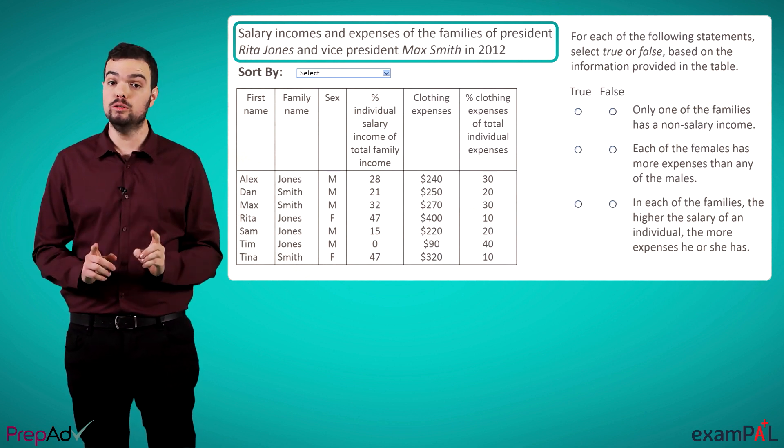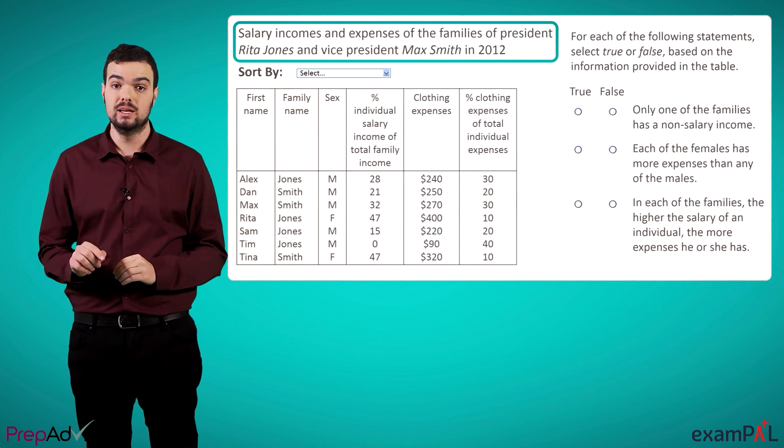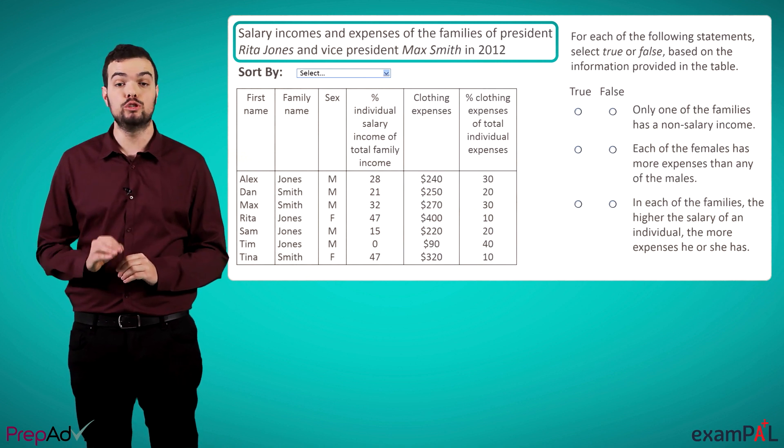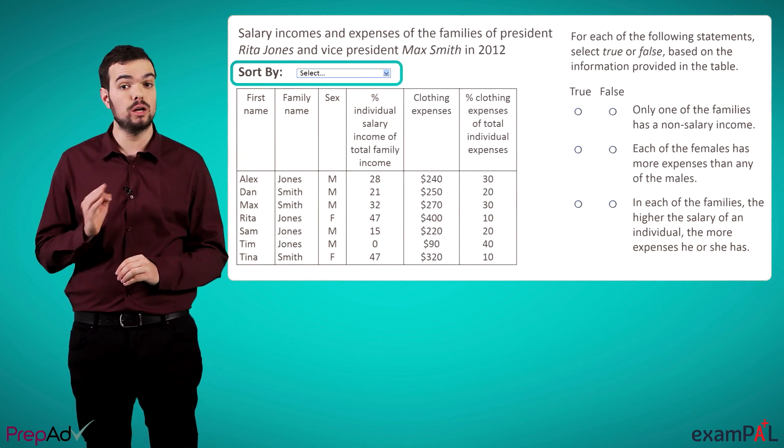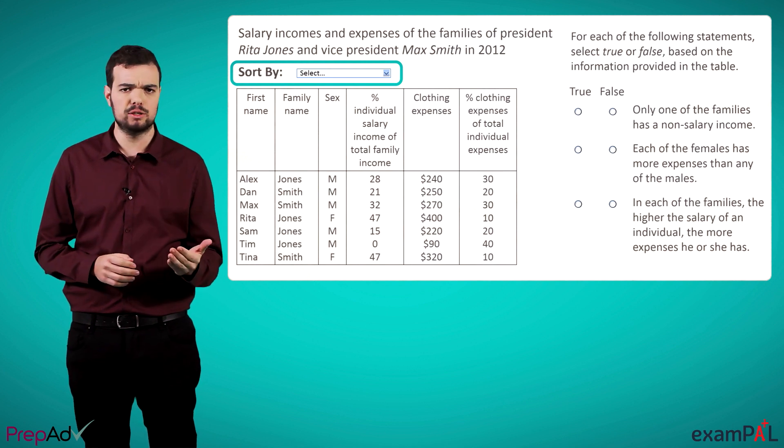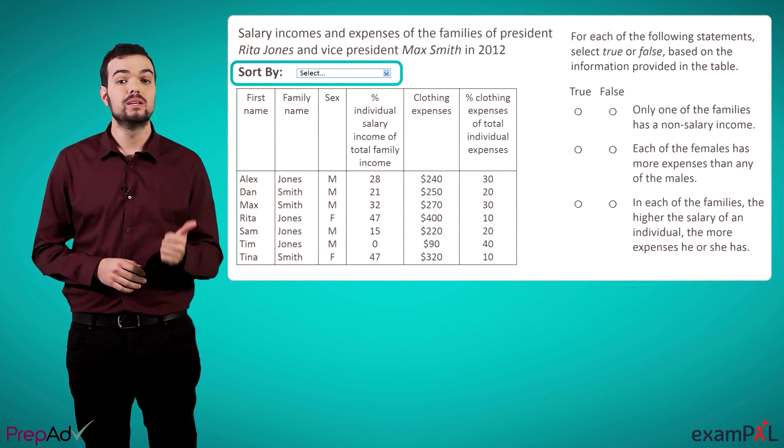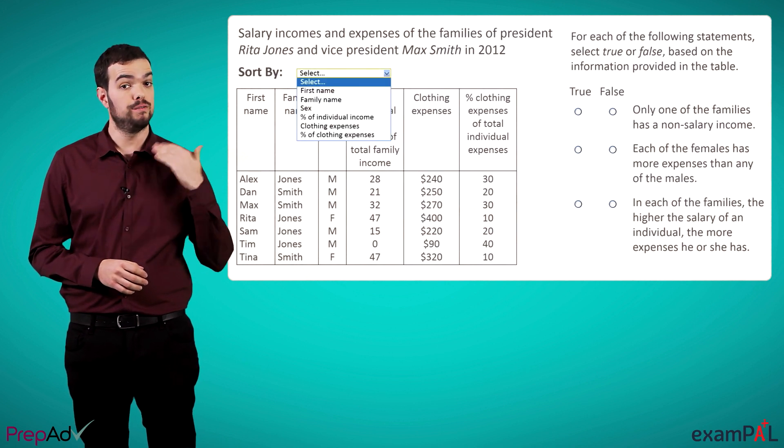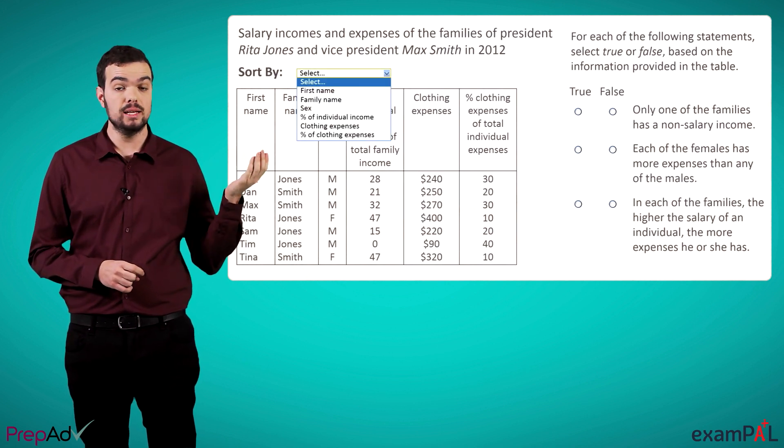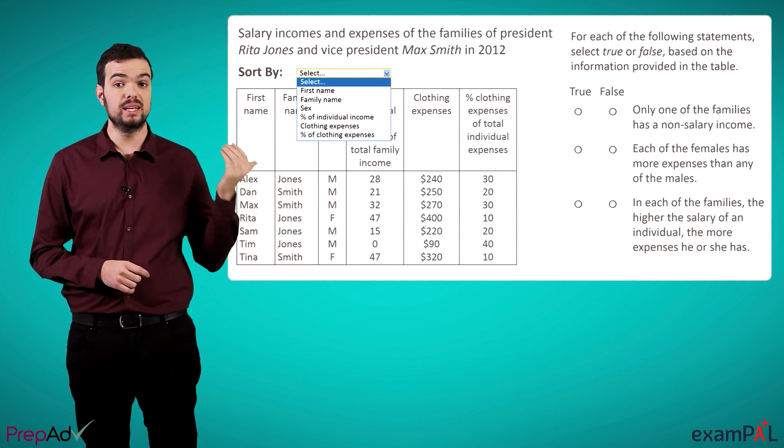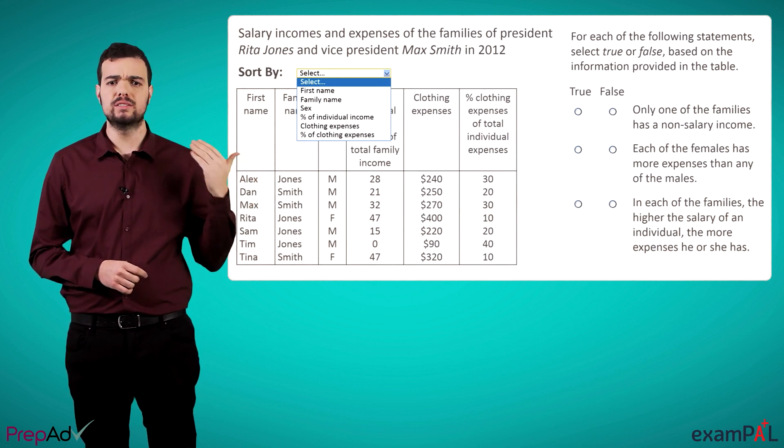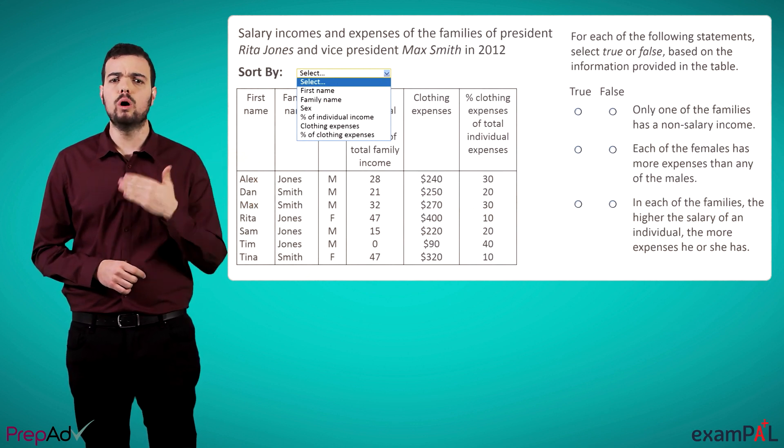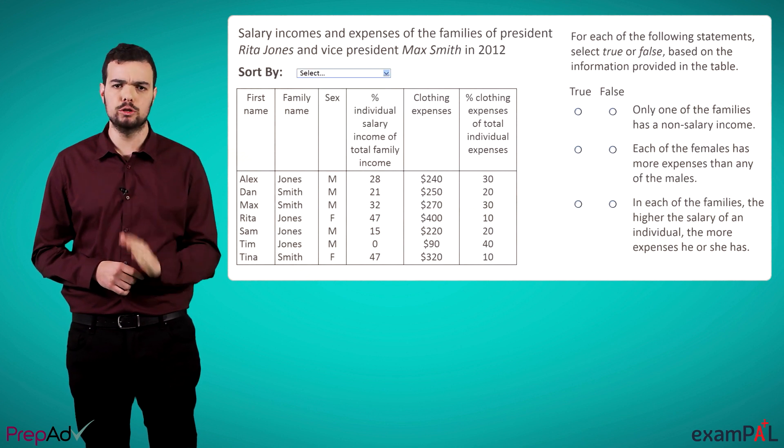But what is special about the tables in these questions is that we are given the option to sort them by any of their columns, just like an Excel document or Google Sheets. In this example, we're given the option of sorting the table by first name, last name, percentage of salary income, and so on and so forth. For those of us who often work with spreadsheets, this is familiar ground.